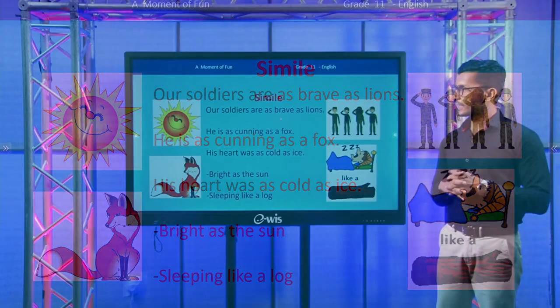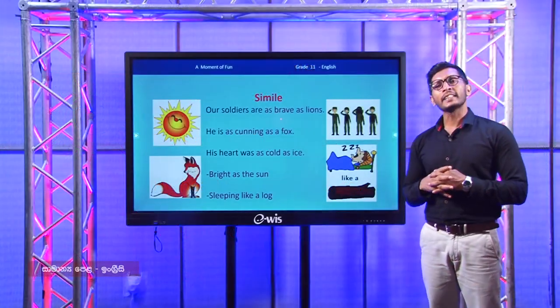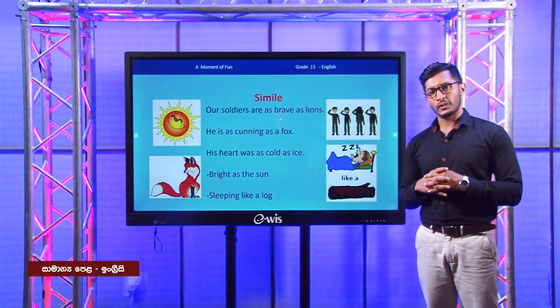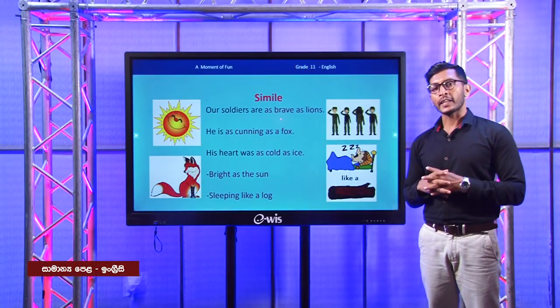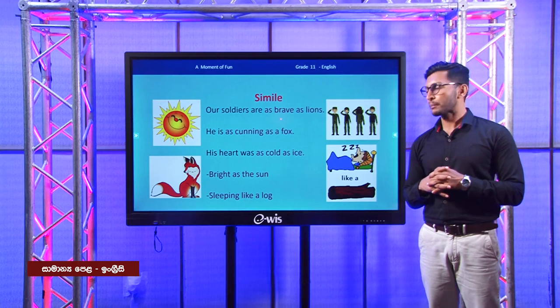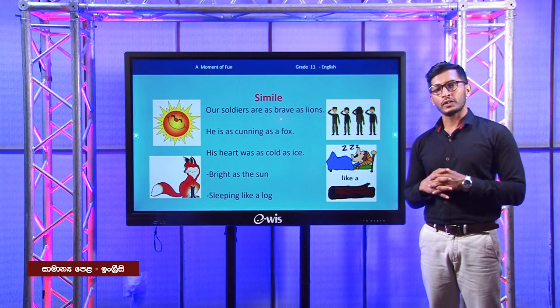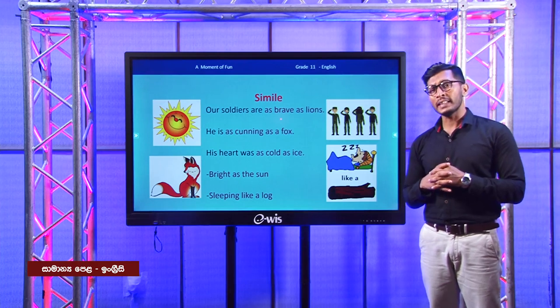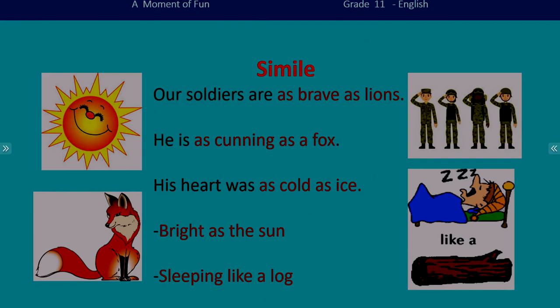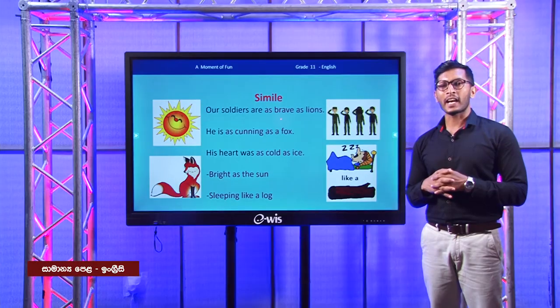See the second one: he is as cunning as a fox. Here he is compared to fox. If a person is very cunning, we say he is as cunning as a fox. We know the fox is said to be a very cunning animal.